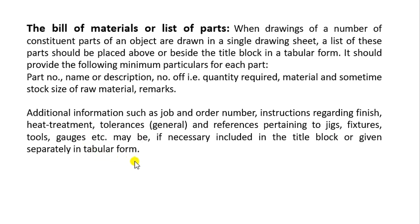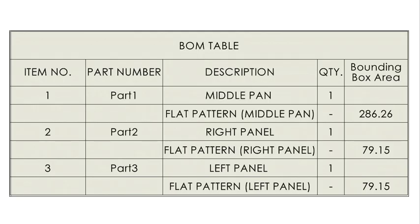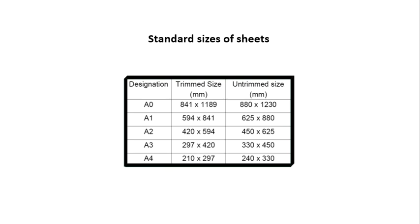The bill of material table includes: item numbers, part numbers, description, quantity, and bounding box area. Now let us look at the standard sizes of sheets which we generally use.